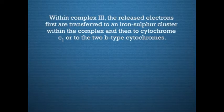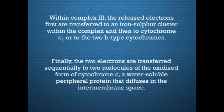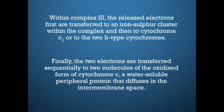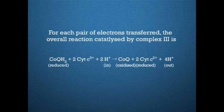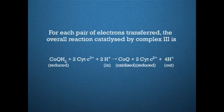Within complex 3, the released electrons are first transferred to an iron-sulphur cluster within the complex, and then to cytochrome C1 or to the two B-type cytochromes. Finally, the two electrons are transferred sequentially to two molecules of the oxidised form of cytochrome C, a water-soluble peripheral protein that diffuses in the intermembrane space. For each pair of electrons transferred, the overall reaction catalyzed by complex 3 is: CoQH2 + 2 cytochrome C³⁺ + 2H⁺ → CoQ + 2 cytochrome C²⁺ + 4H⁺.